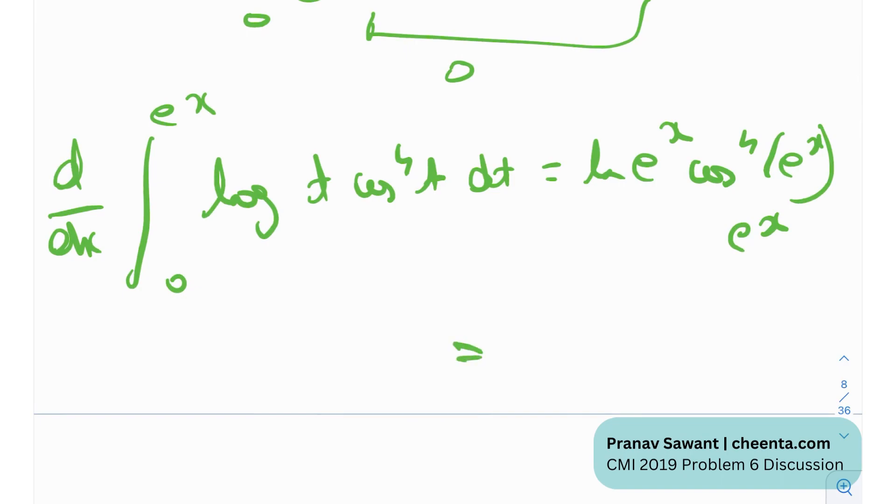And if I just simplify this, ln e raised to the power x is nothing but x times e raised to the power x times cosine raised to the power 4 e raised to the power x and that is where part a stops.